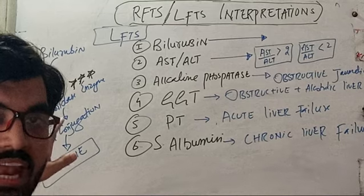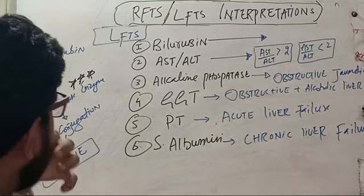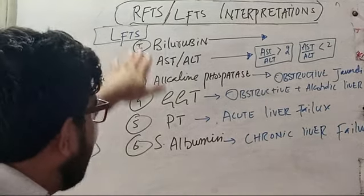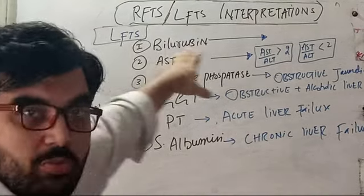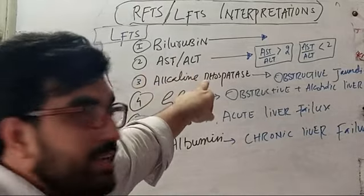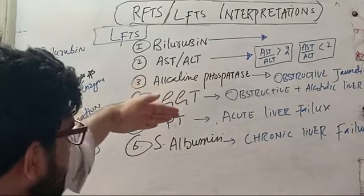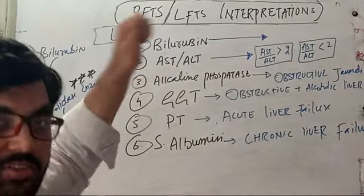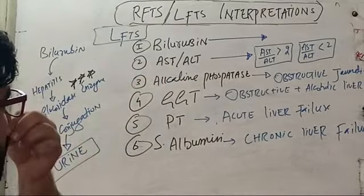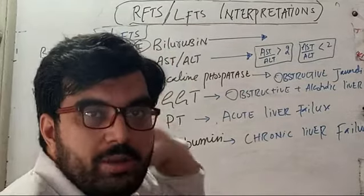Coming toward the LFTs interpretation — these are the whole LFTs: bilirubin, AST, ALT, alkaline phosphatase, GGT, PT, and serum albumin. So coming first toward the bilirubin.